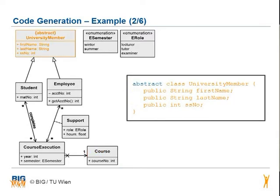When you have an abstract class, the abstract identifier is written before the word class. As you remember, the class cannot be instantiated, but it can be subclassed. You can see that student and employee are subclasses of the abstract university member.